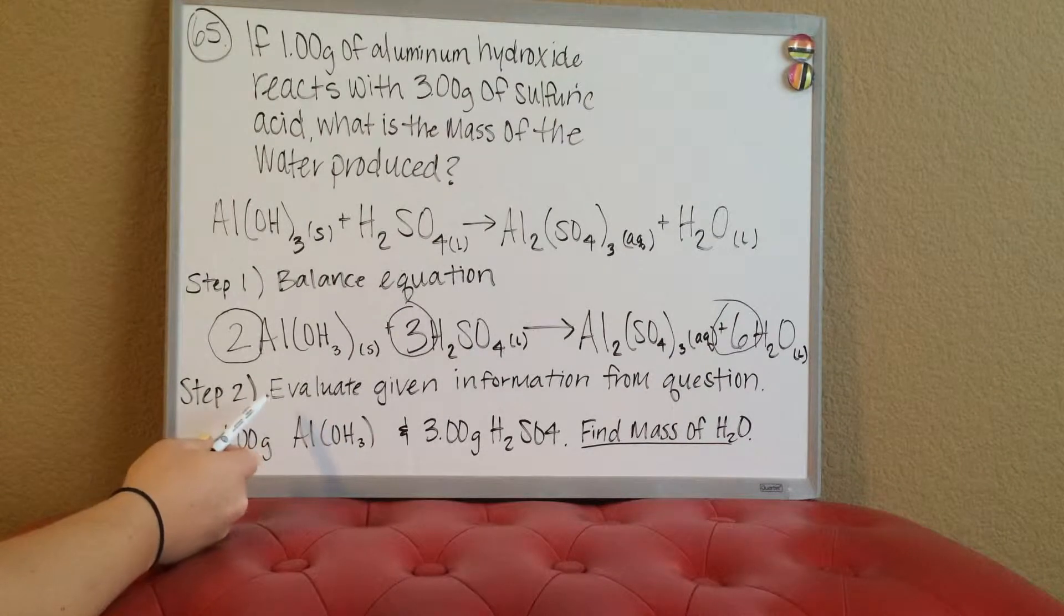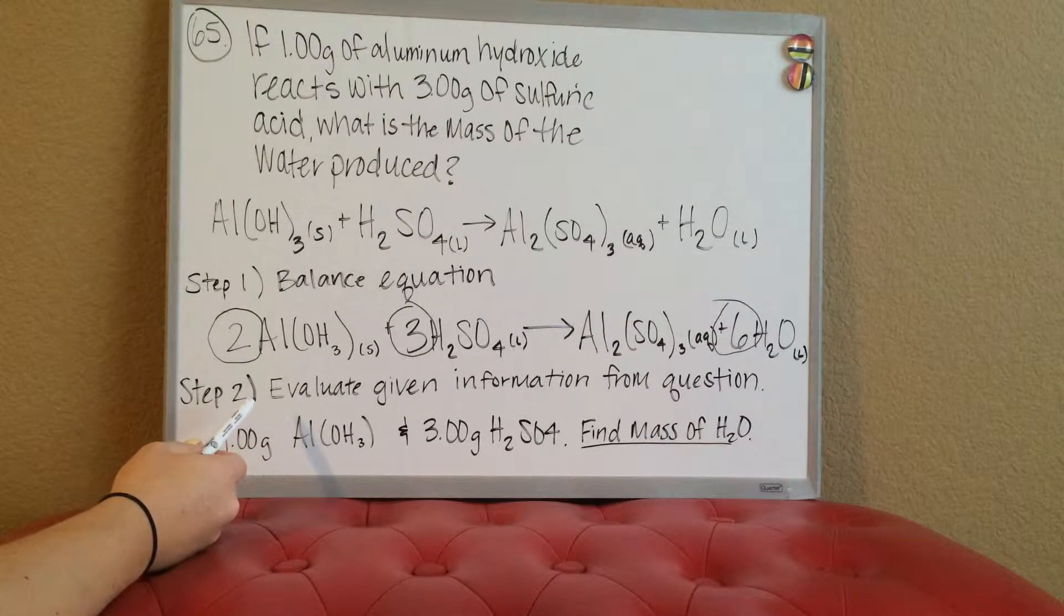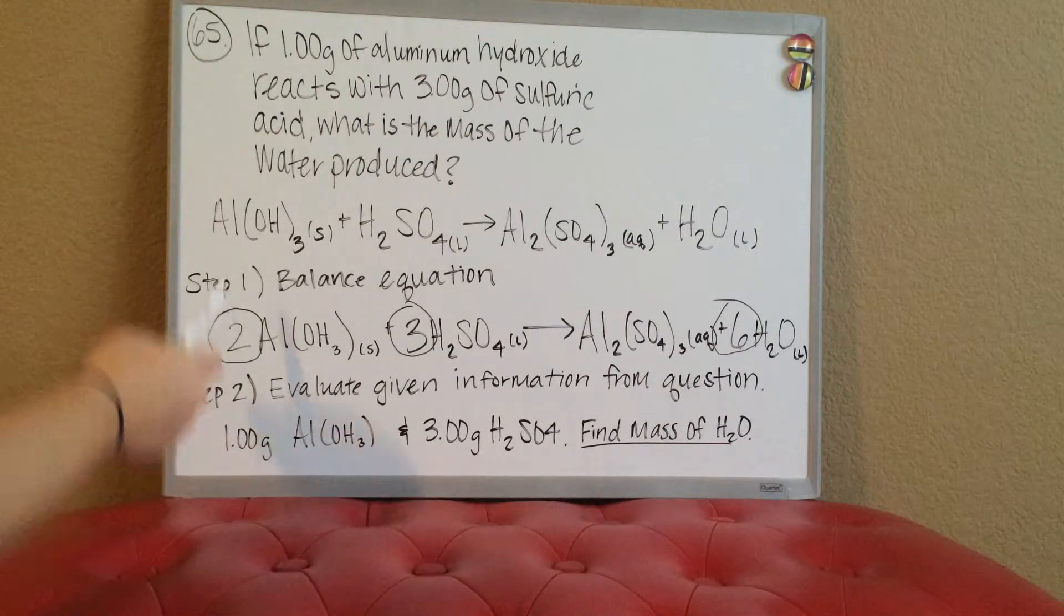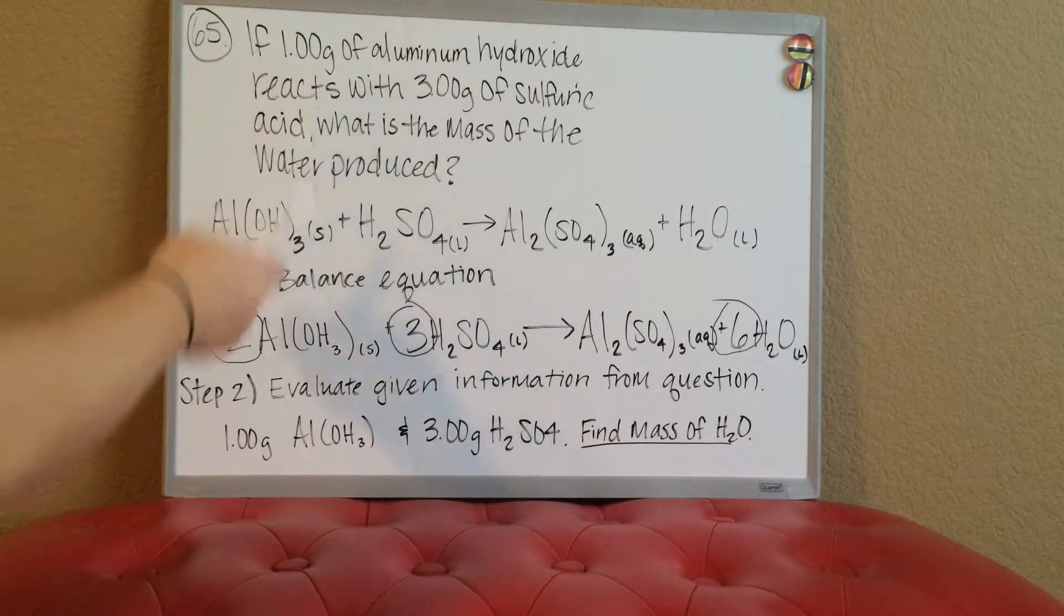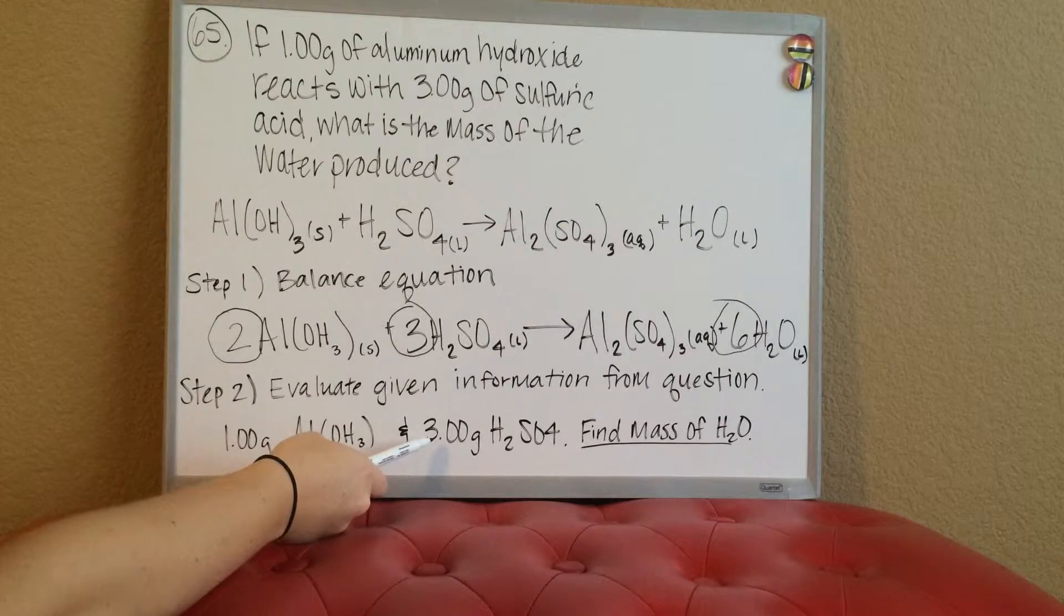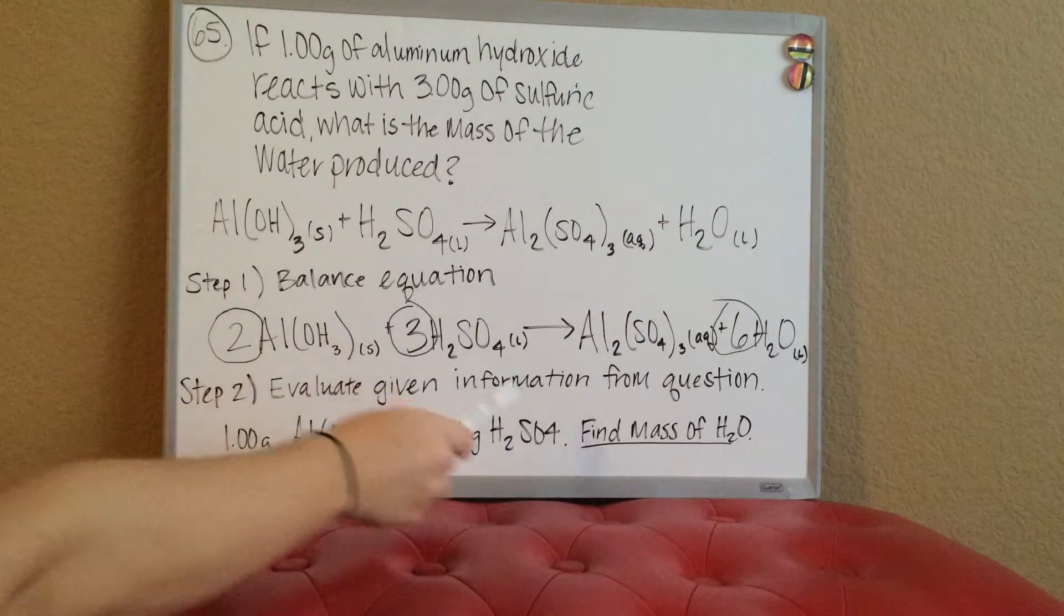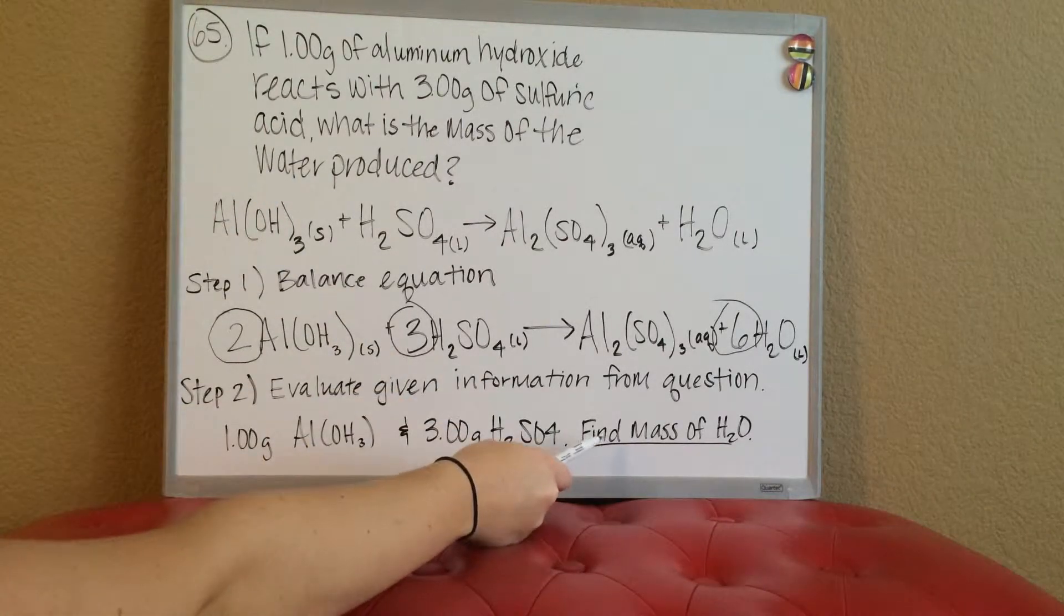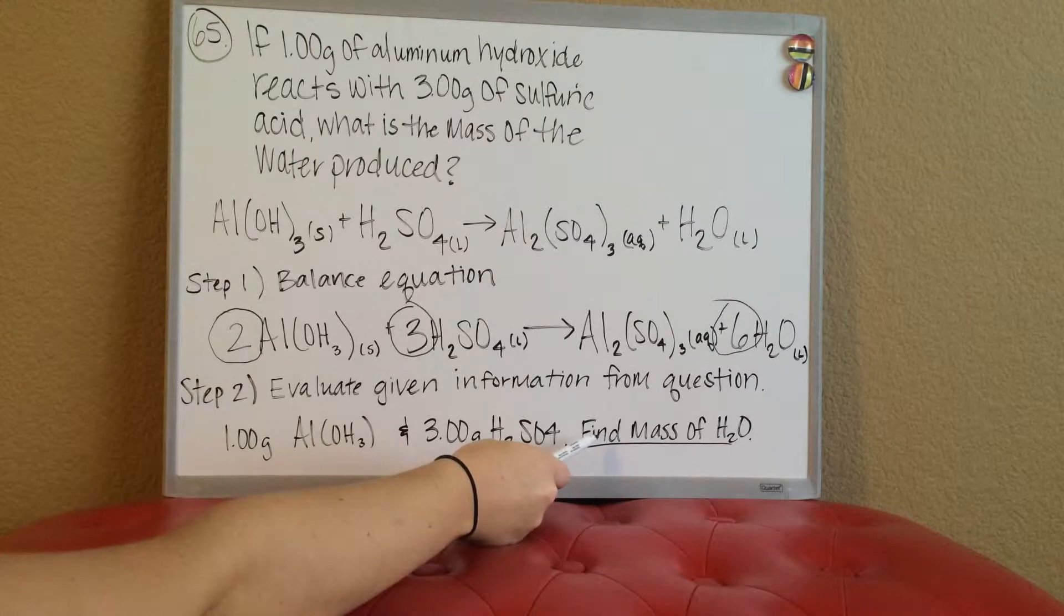Next step is you need to evaluate the given information. What we know here is the question is asking when you have one gram of aluminum hydroxide and three grams of sulfuric acid, what is the water produced. So we want to find the mass of the H2O.